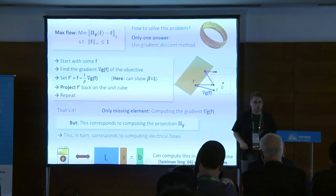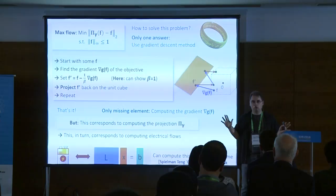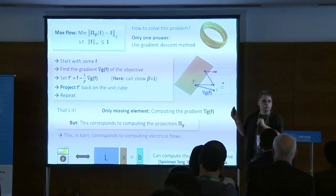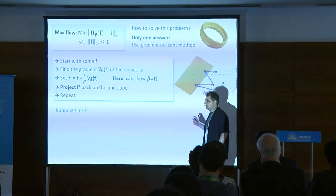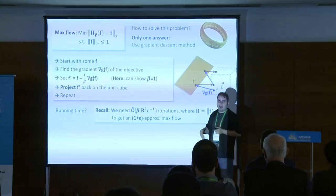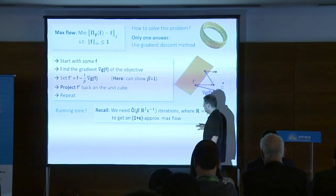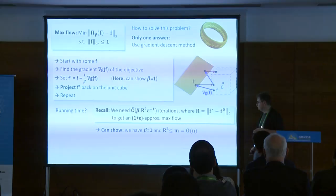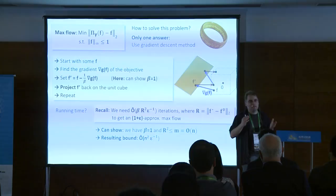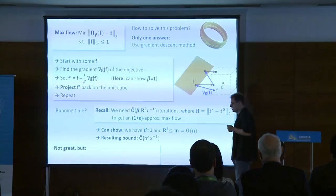The only non-trivial step of this algorithm is computing the gradient, which boils down to solving a Laplacian system we know how to solve extremely efficiently. That's all there is — you now have a full working max flow algorithm that looks very different from augmenting-path-based algorithms. The question is: what is the running time? The convergence depends on beta — which is already one — and the distance to the optimum, which is not hard to bound by roughly the square root of m, which is O(m). Putting everything together, you get an algorithm running in time n-squared over epsilon. That's not great — we know how to solve the problem exactly in n-to-the-three-halves time — but the point is we didn't have to think about what we were doing; we just took an off-the-shelf algorithm.